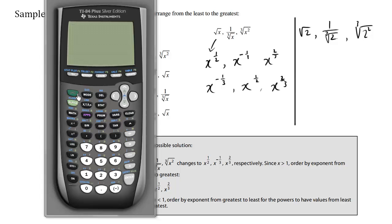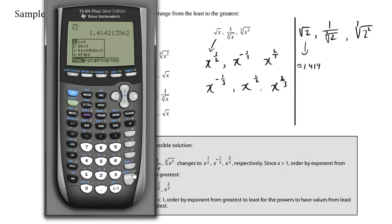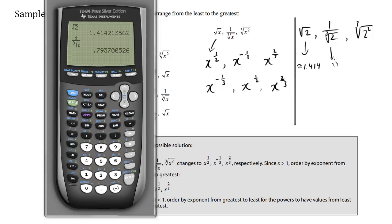I have here the square root of 2 is equal to 1.41 approximately. So I'll just write, this is approximately 1.414, and the second one here would be 1 over, this means cube root here, the cube root of 2.